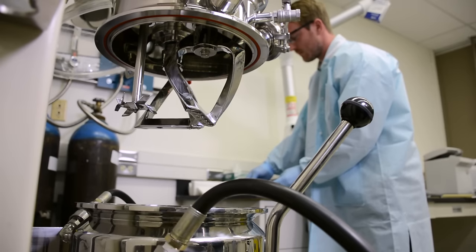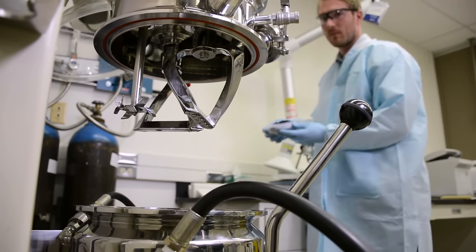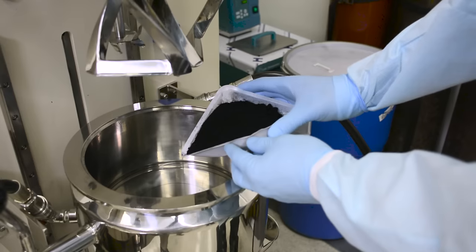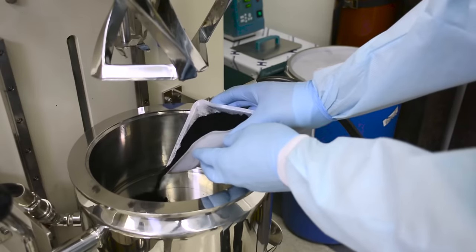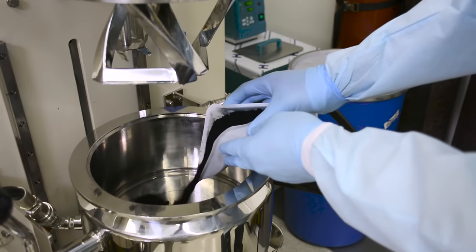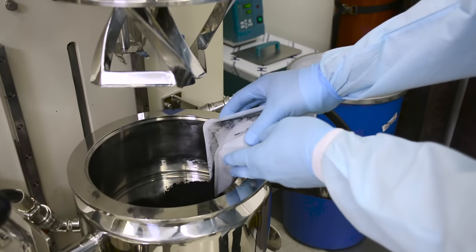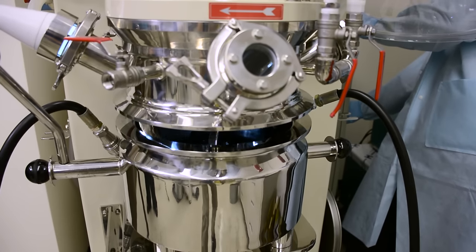The first step in making battery electrodes is mixing a batter-like slurry. PNNL scientists are exploring many different electrode materials, such as lithium, sulfur, sodium, and magnesium, that can make batteries more efficient.